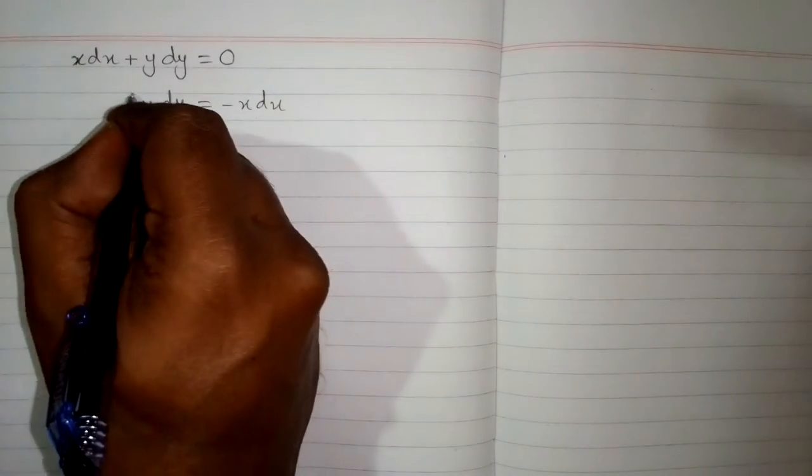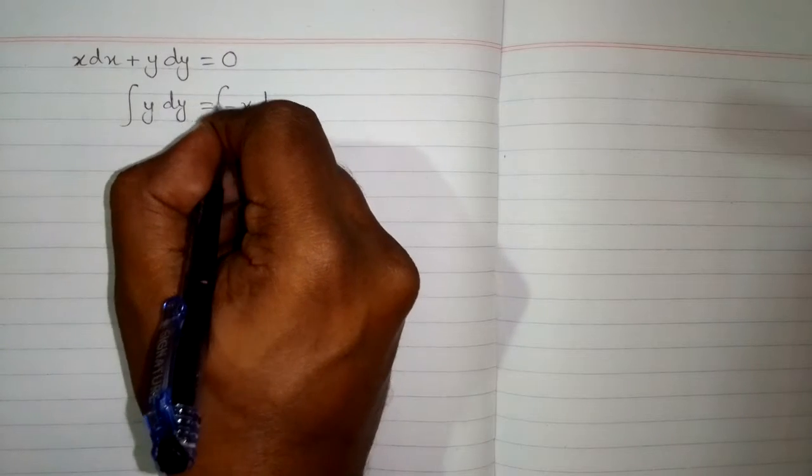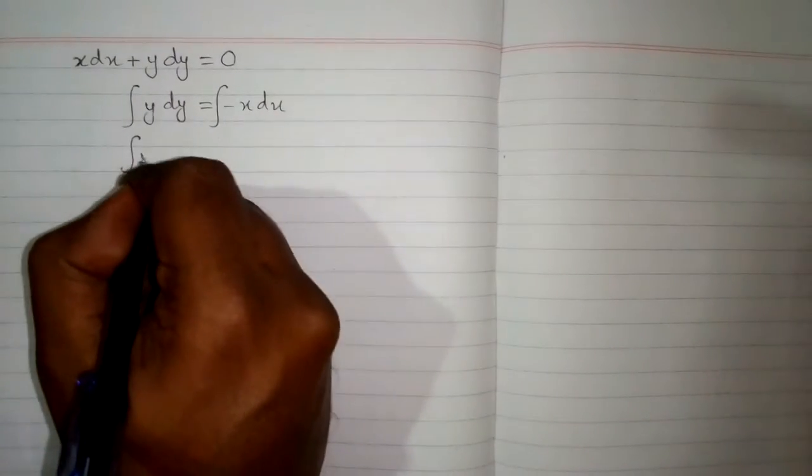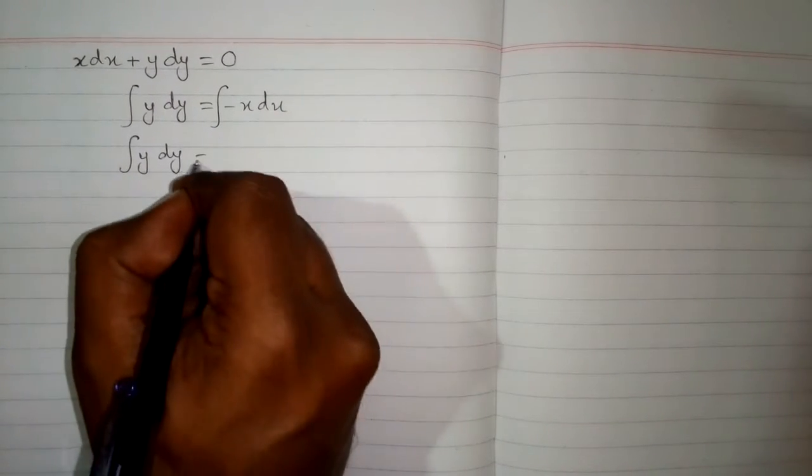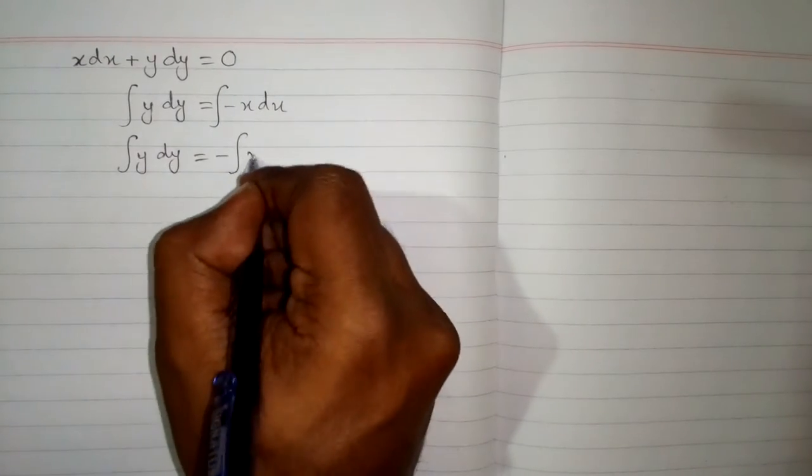Now we integrate both sides. So we have integral of y dy minus integral of x dx.